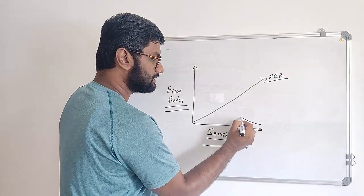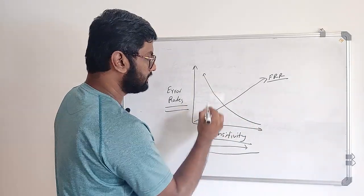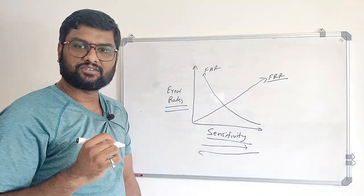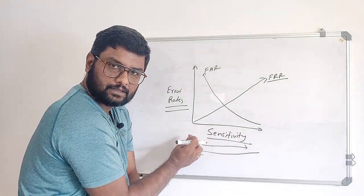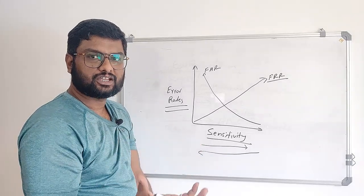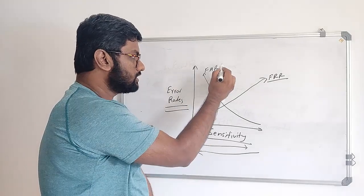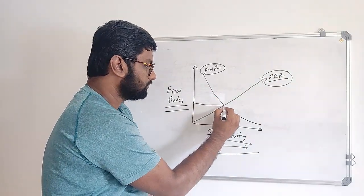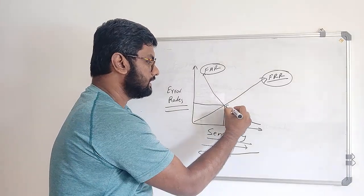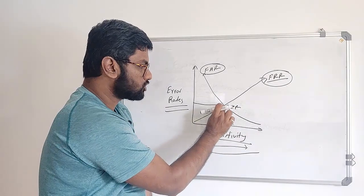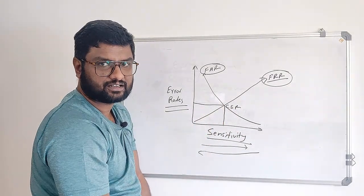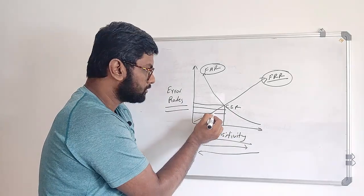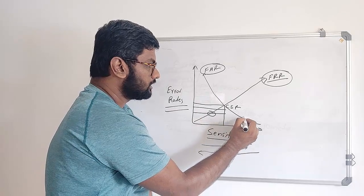But if you decrease the sensitivity, then in that case, FAR will be high. Because now what happens is the sensitivity is low. In that case, what happens is based on basic information only, they give the access. So this is basically called FAR and this is called FRR. By this way, what happens, you can control the FRR also and you can control the FAR also.